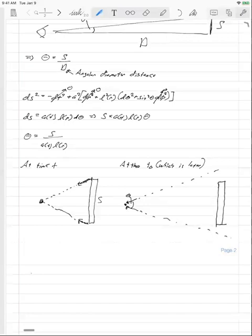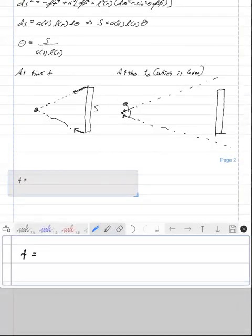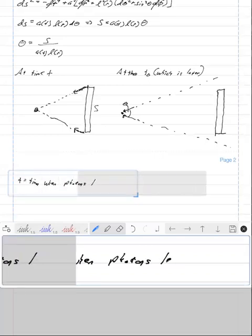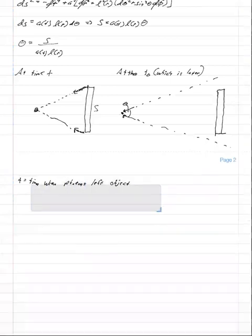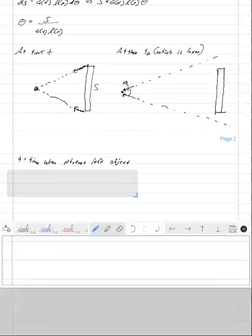So once again, T is equal to the time when photons left the object and that determines the angular size that you see today. So once again, we have that theta is equal to S over A of T times L of R.